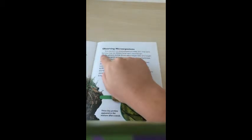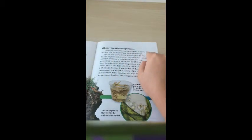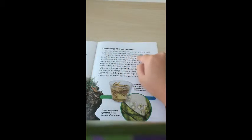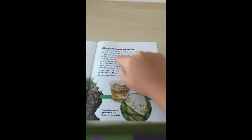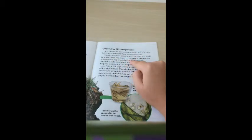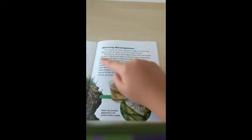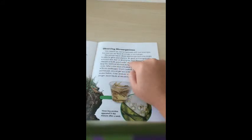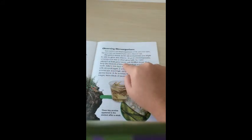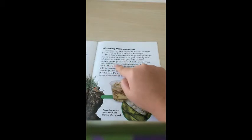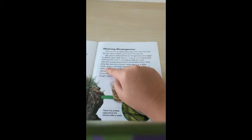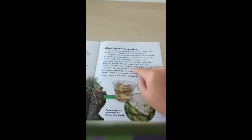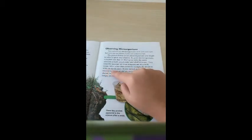Observing microorganisms. You cannot see microorganisms with just your eyes, but you can see them if you use a microscope. The picture below shows microorganisms you might be able to grow and observe. To grow microorganisms, scientists mix hay or dried grass with the same amount of pond water and distilled water. They keep the mixture at room temperature in a room that's dark. After a few days, scientists sample the mixture with an eyedropper.